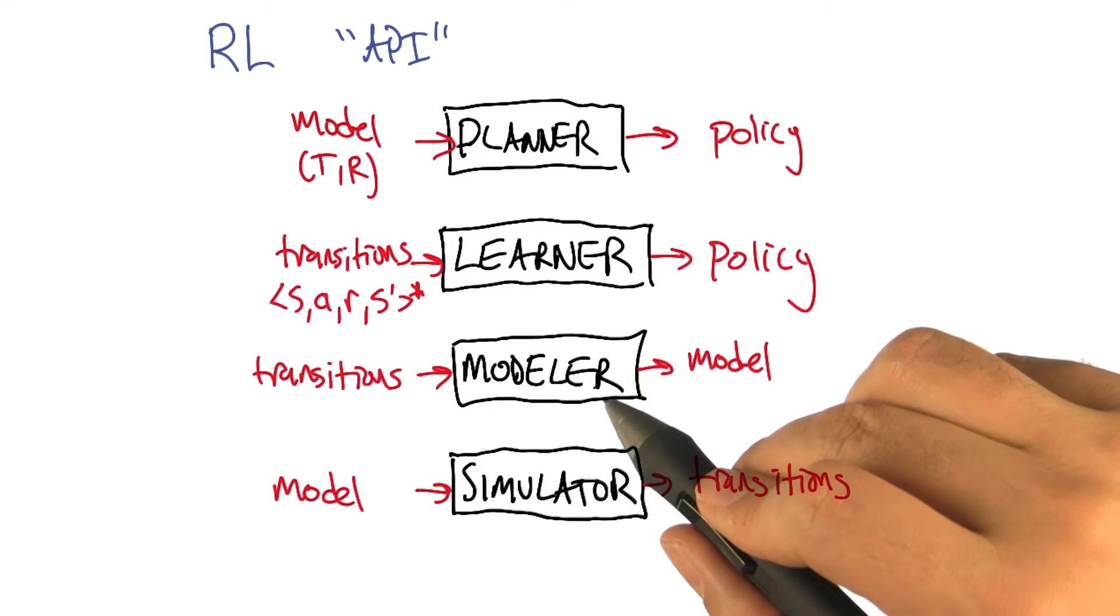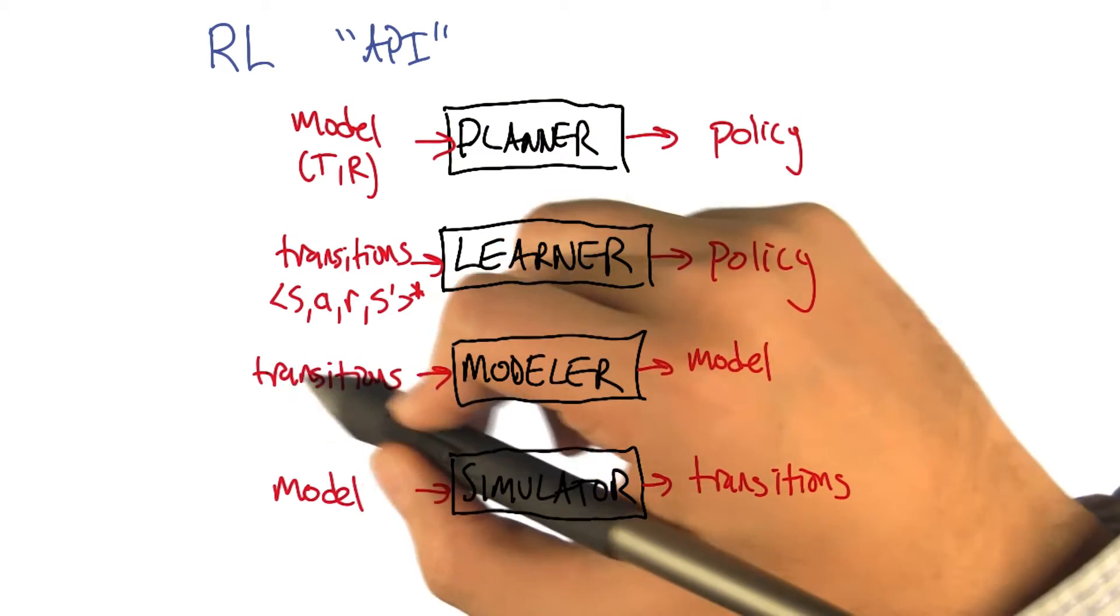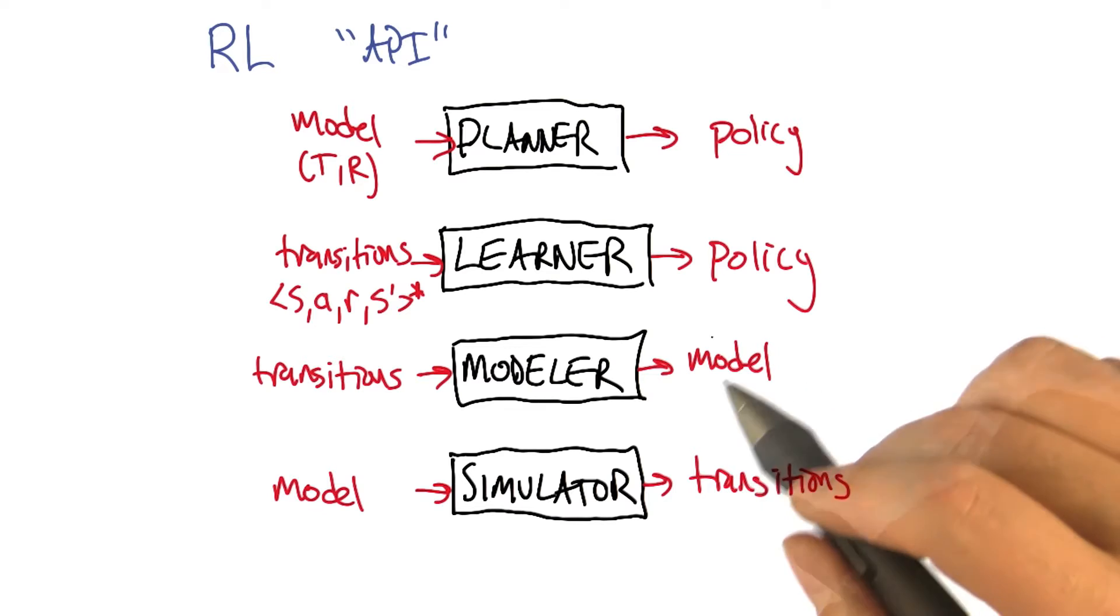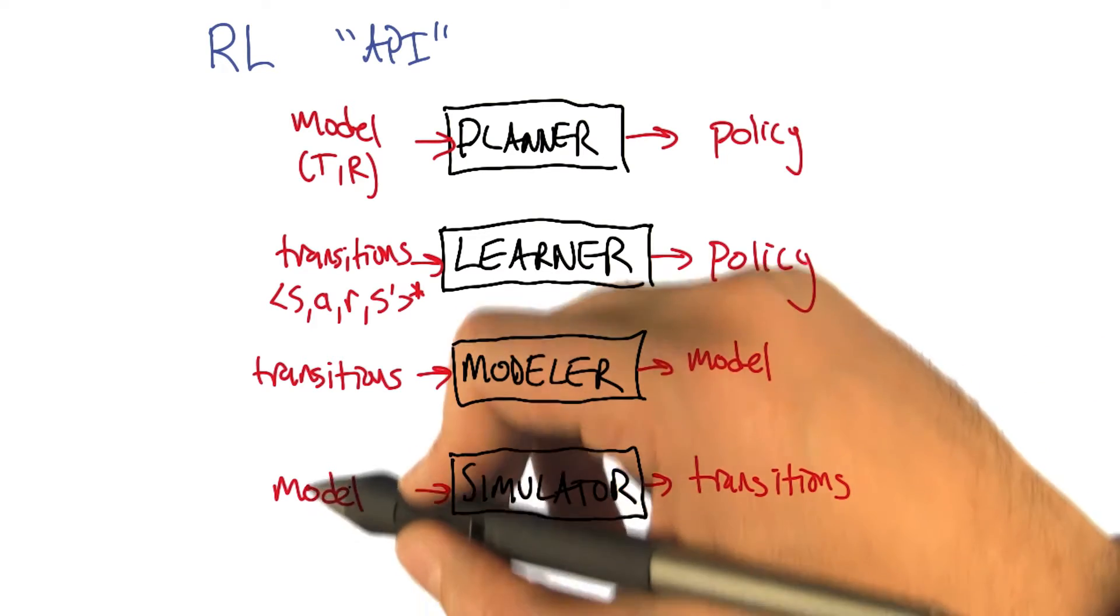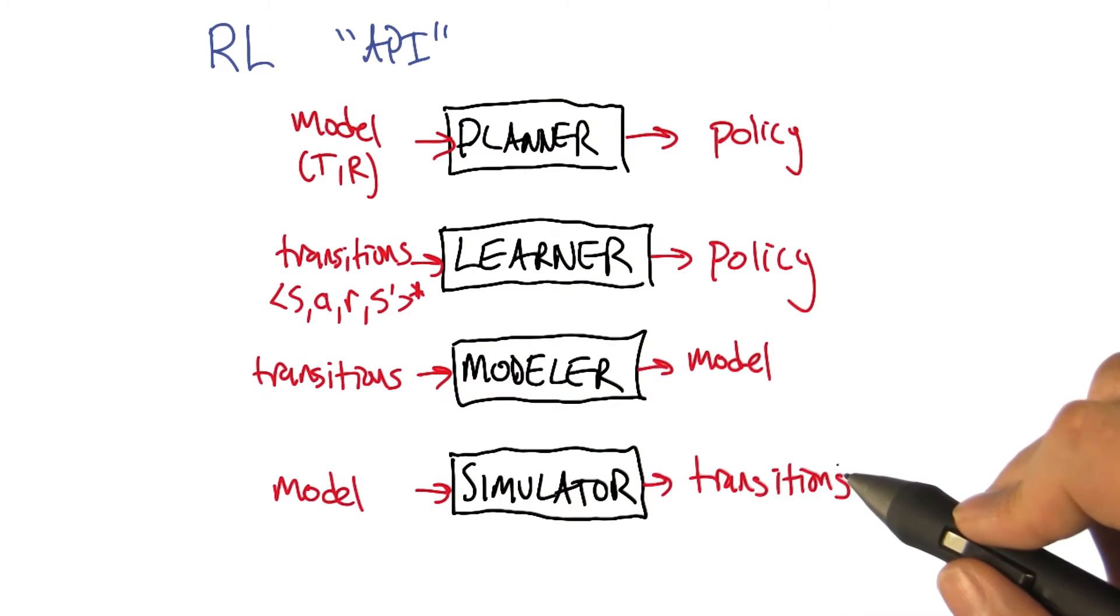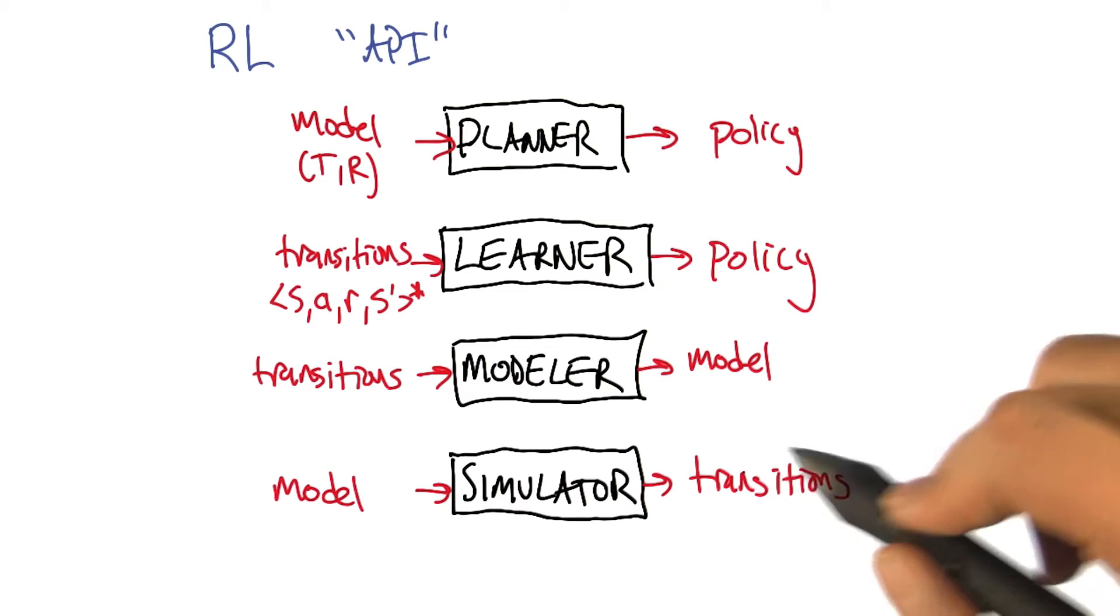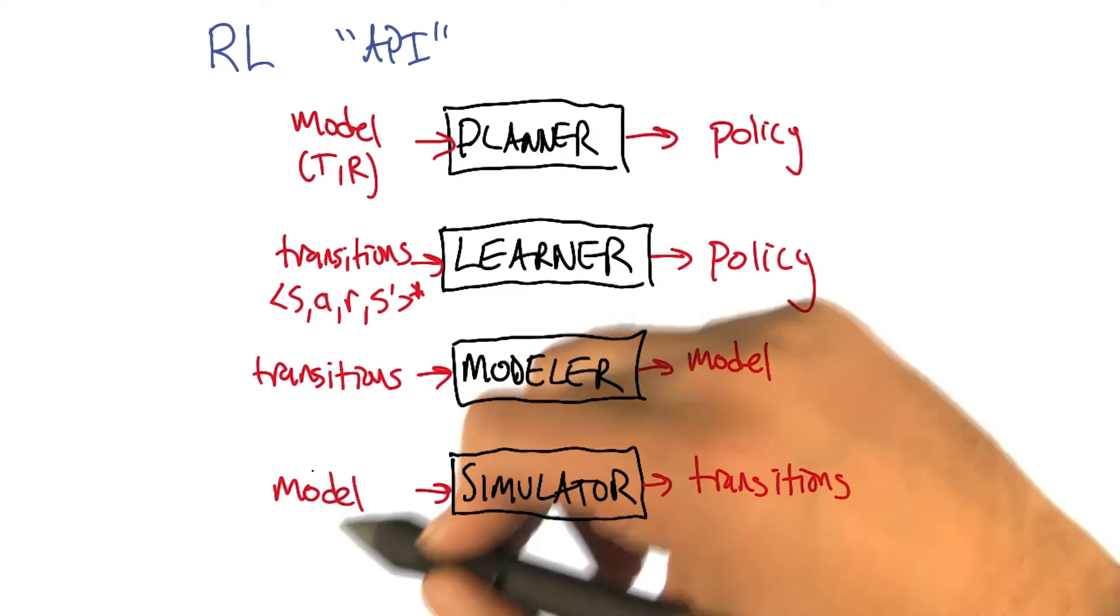One is the notion of a modeler. What a modeler can do is take transitions and build a model out of it. A simulator is kind of the inverse, where you can take a model and use it to generate transitions. You can actually imagine running around in the world just by simulating that world.